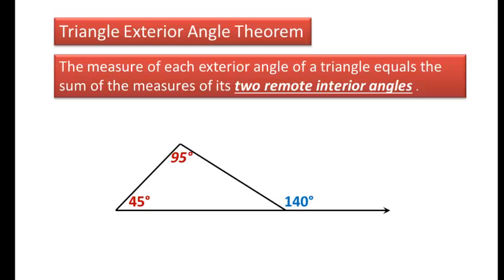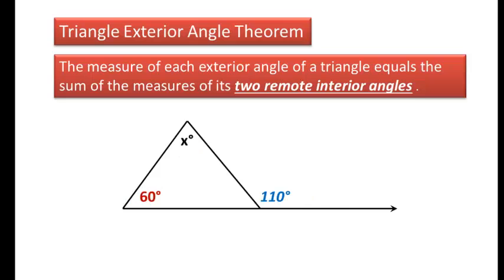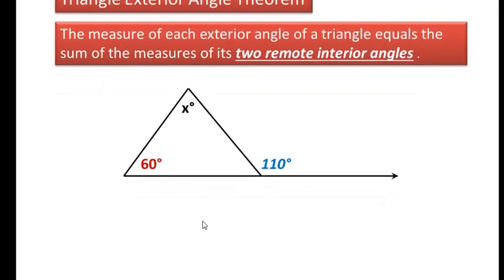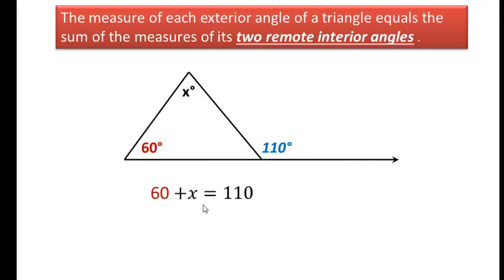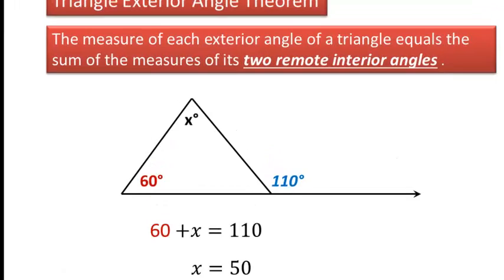Now let's use this to set up an equation. In this triangle here, let's solve for x. So using what we just learned, we know that these two angles here add up to this exterior angle, so we can write our equation as 60 plus x equals 110. And then subtract 60 from each side, that leaves us with x equals 50.